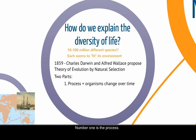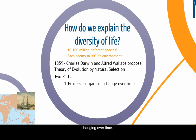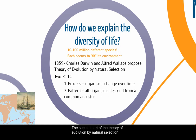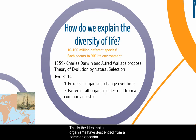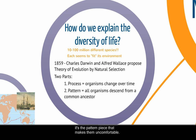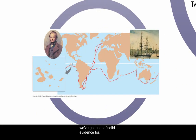The theory has two main parts. Number one is the process: the process of evolution is the idea that organisms are constantly changing over time. The second part is the pattern, which is the idea that all organisms have descended from a common ancestor. Usually when people are unsure about evolution, it's the pattern piece that makes them uncomfortable. The process piece — the fact that organisms change over time — we have a lot of solid evidence for.